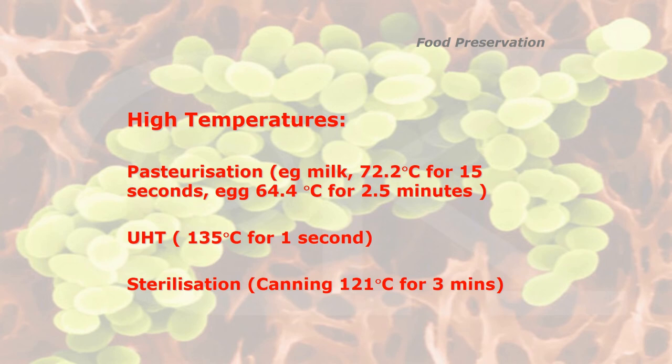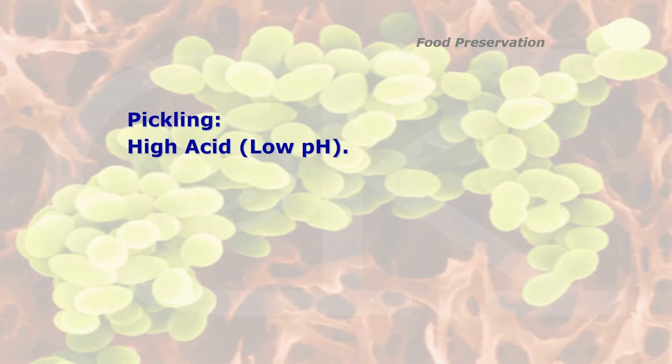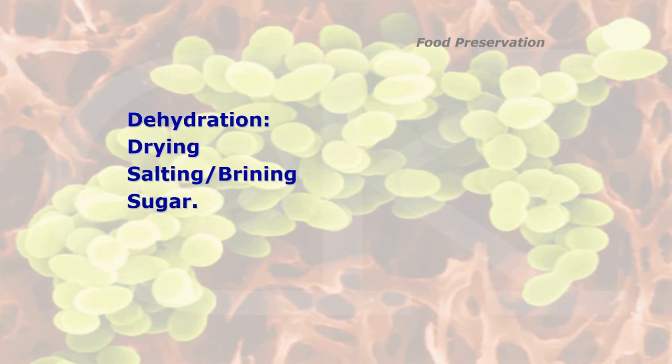Other methods of food preservation include pickling, using a high acid with a low pH value such as vinegar, lemon juice or lime juice. Then there's dehydration — drying — where you can add salt, brine, or even sugar to food to draw out the liquid and reduce its moisture content.